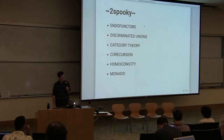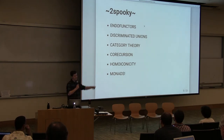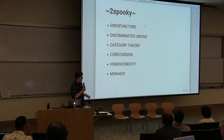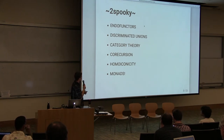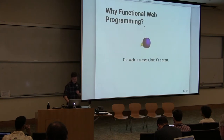But things are spooky, things are scary. What is a discriminated union? What is co-recursion? Monads. We had great talks about monads earlier, but I think for a lot of people, myself included, when we first came across homoiconicity — I'm not even sure how to pronounce it, let alone what it means. So we've got to sort of break it down.